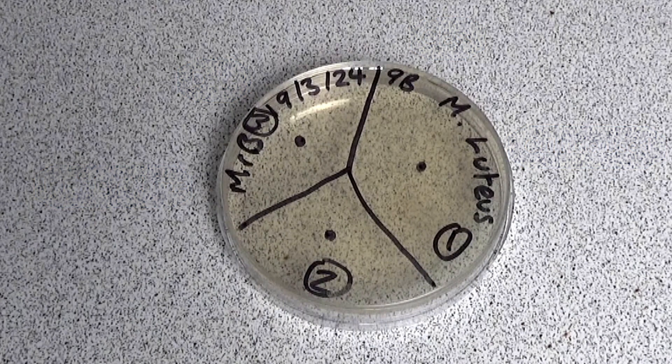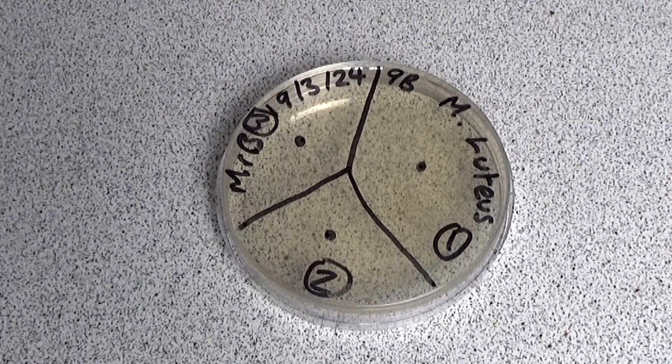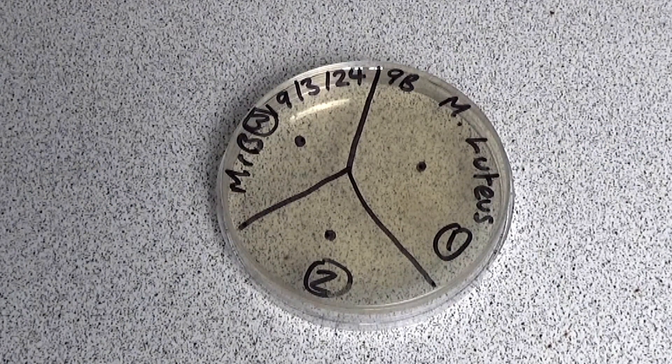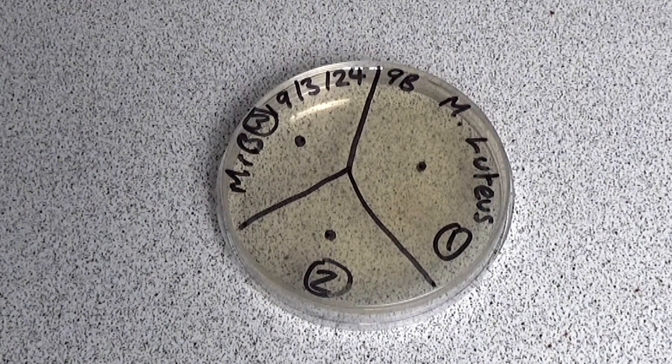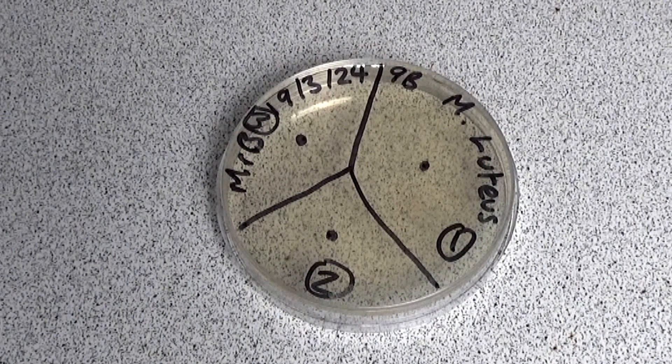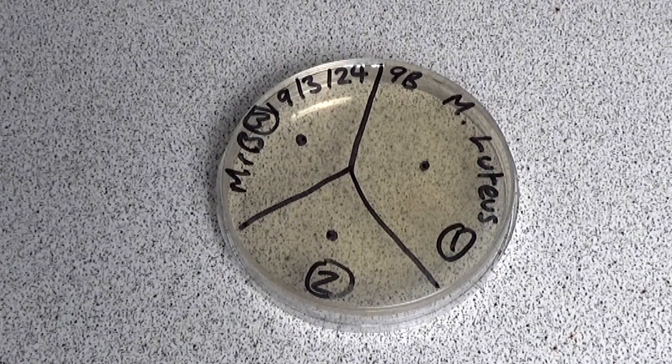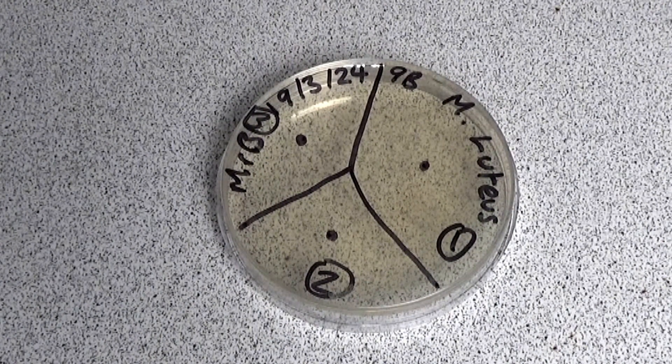Your students then divide the base into three sections, numbering them one to three and place a dot in the middle of each section to show where they're going to place the antiseptic disc. Stress to your students they need to label the dish at this stage because once they've put the bacterial culture on the agar, they can't then turn the petri dish back over again.